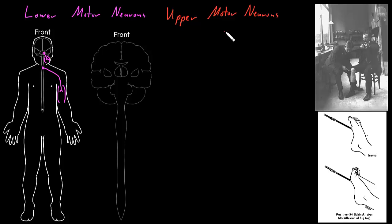The somas of the upper motor neurons are found mainly up in the cerebral cortex, on that outside surface of the cerebrum, and their axons descend down to synapse on lower motor neurons in the brain stem or in the spinal cord. Information flows from the cerebral cortex down these axons to the lower motor neuron somas, and then out the axons of the lower motor neurons to actually reach the skeletal muscle cells.